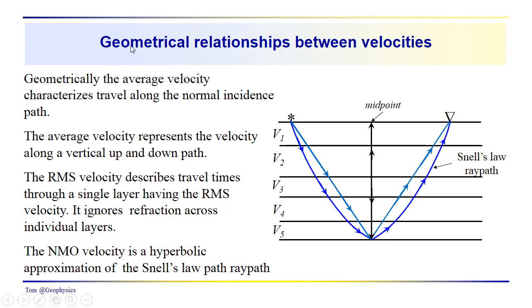So the geometrical relationships, if we want to think about this geometrically, we can think of the average velocity as the velocity representing the travel along a vertical up and down path from the midpoint down to a reflector and back to the surface. The RMS velocity describes travel times through a single layer.